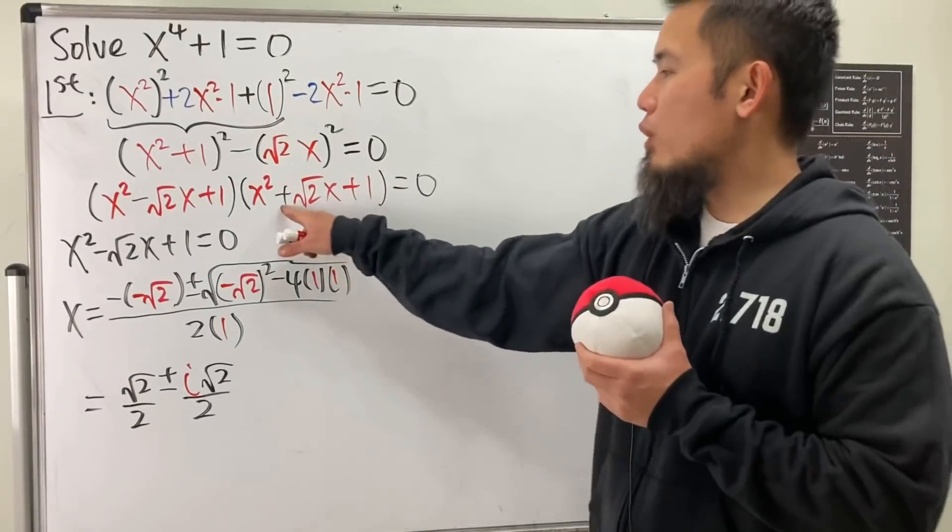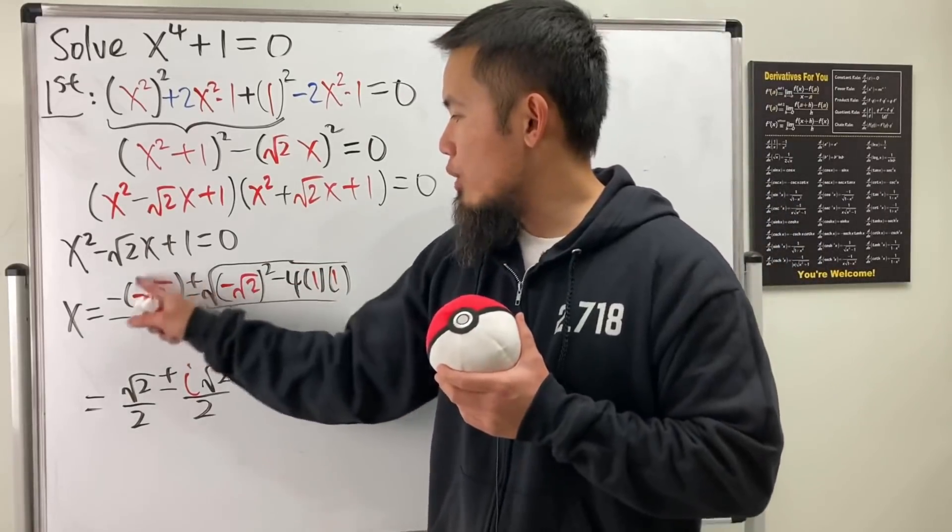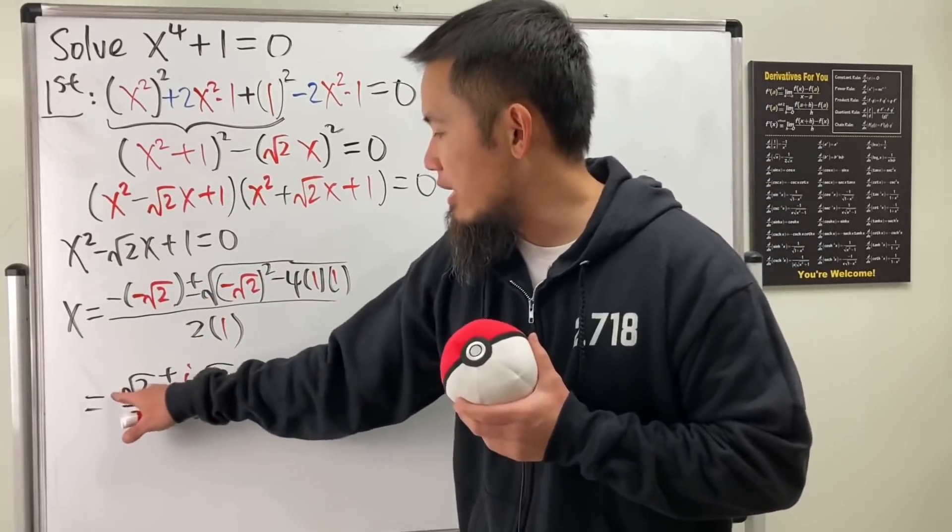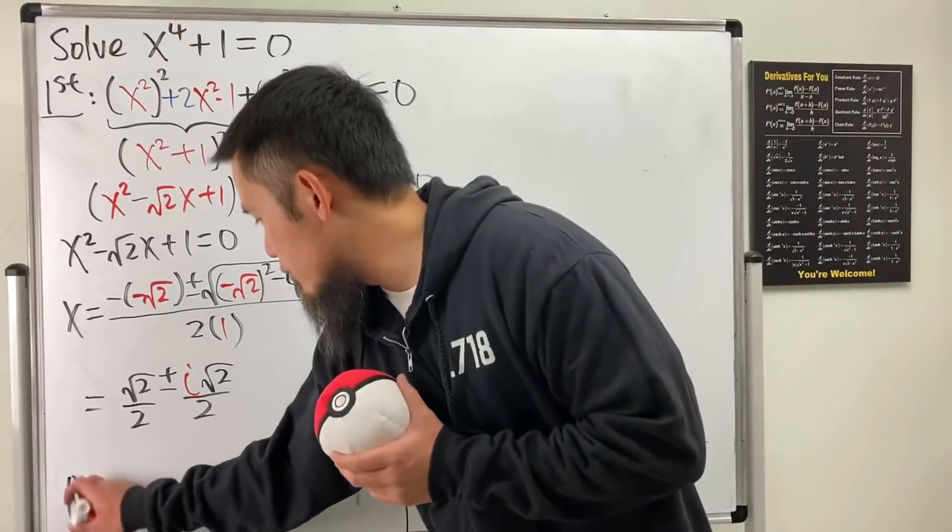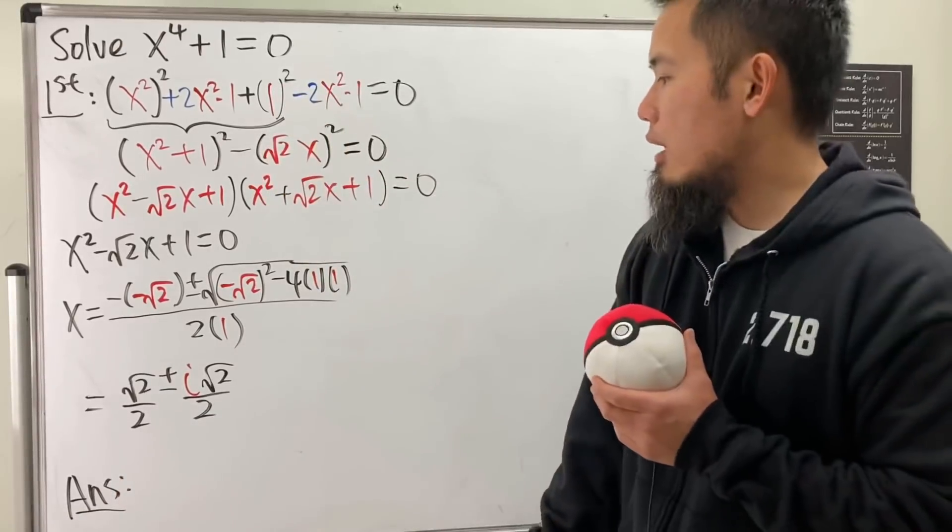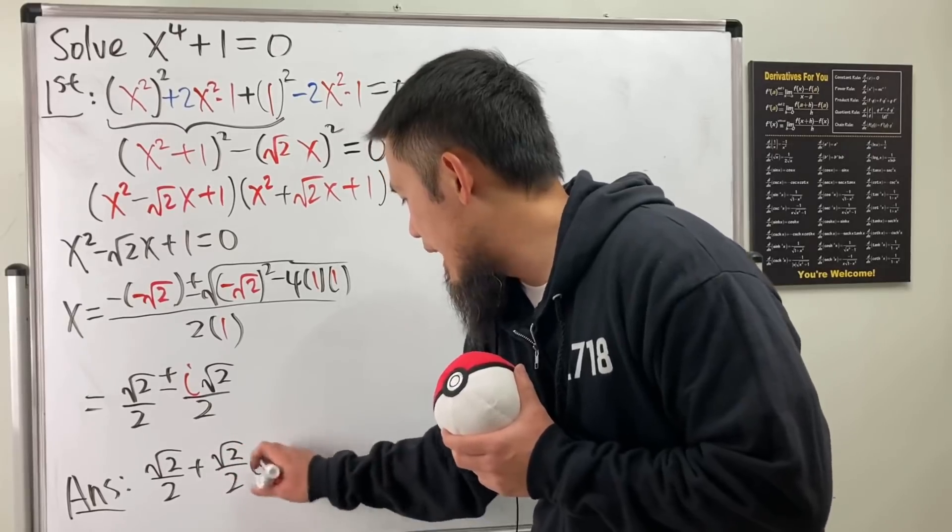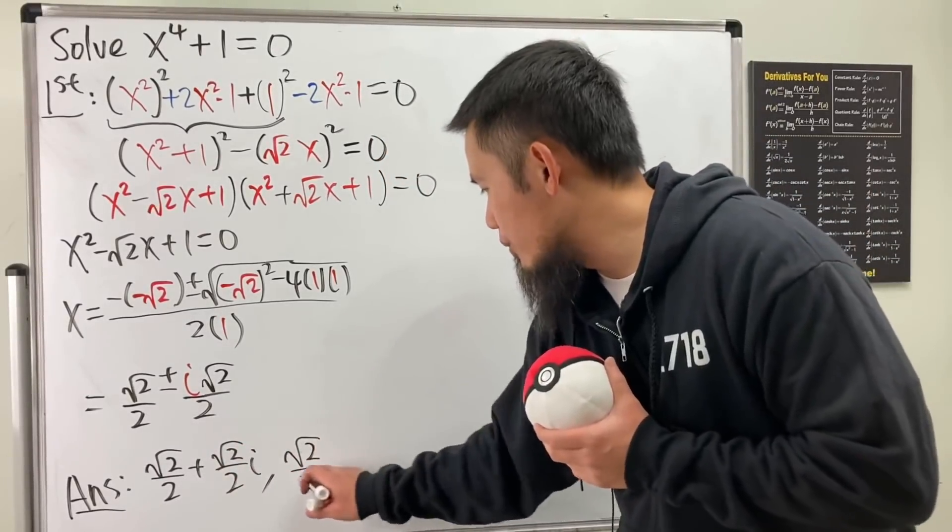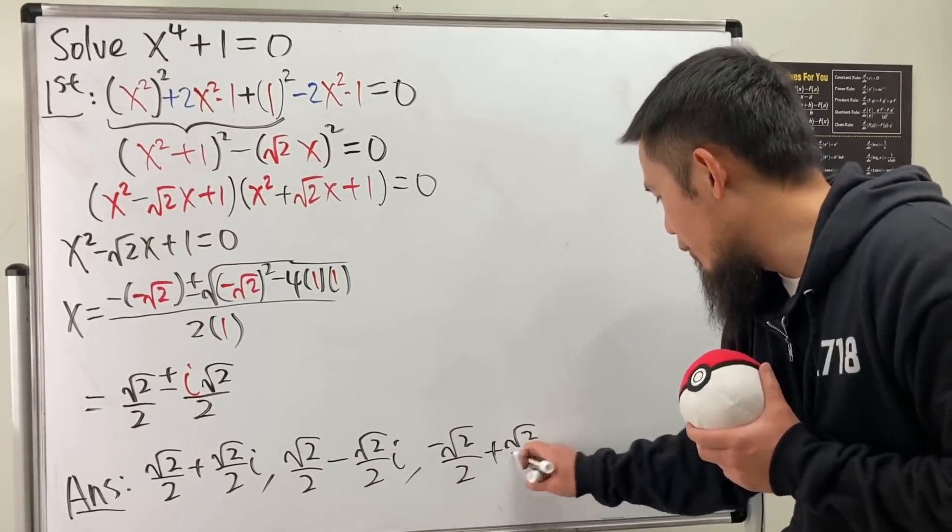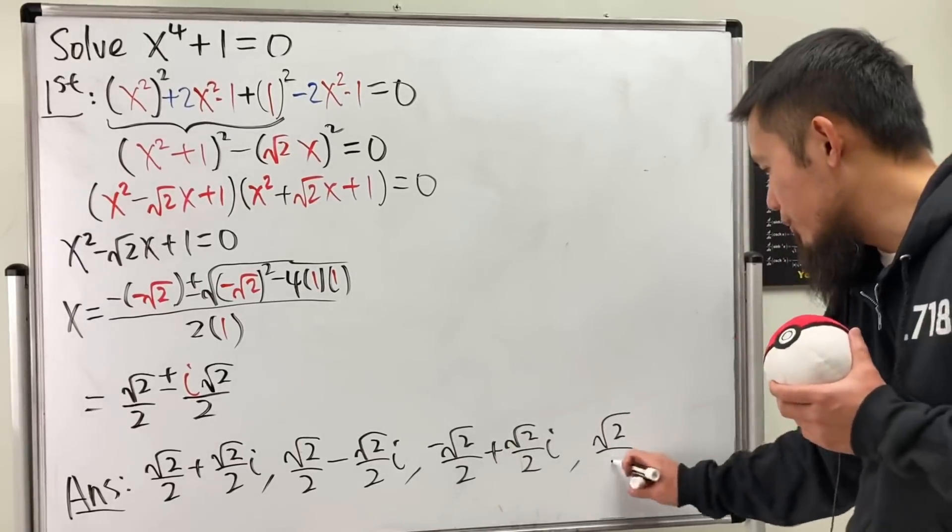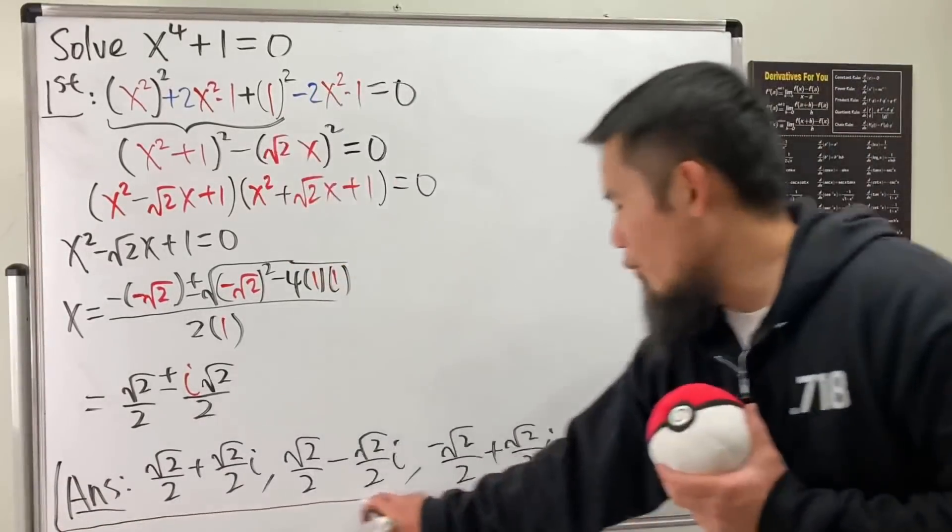And if you look at the second one, of course the only difference is the plus right here. So you have to put a plus square root of 2 right here. That means the answer will be having a negative right there. And that's pretty much it. So I'm going to write down the answers right here for you guys. I'm actually going to write them out to make it clear. So here we go: square root of 2 over 2 plus square root of 2 over 2 i, first guy. And then second guy, square root of 2 over 2 minus square root of 2 over 2 i. Meaning you negative square root of 2 over 2 plus square root of 2 over 2 i. And then one more: negative square root of 2 over 2 minus square root of 2 over 2 i.